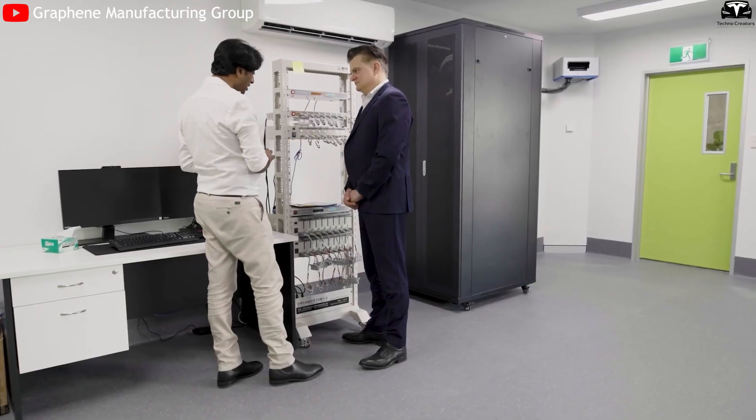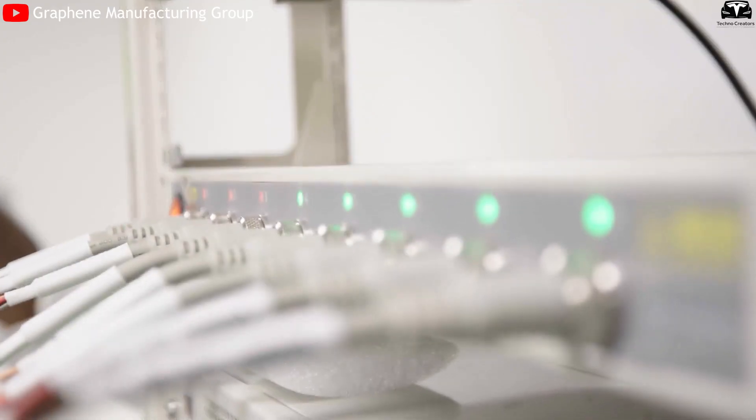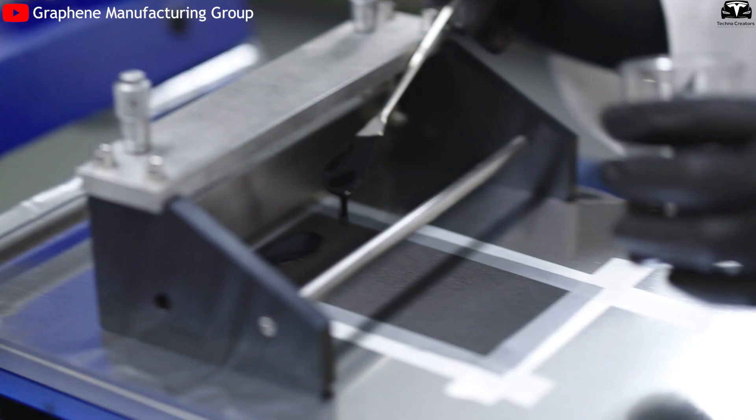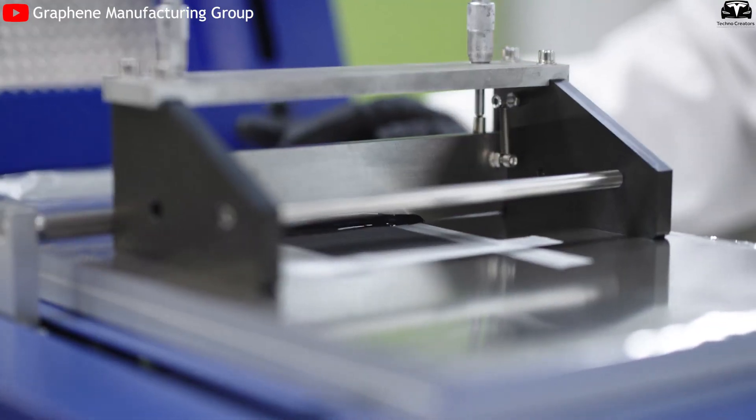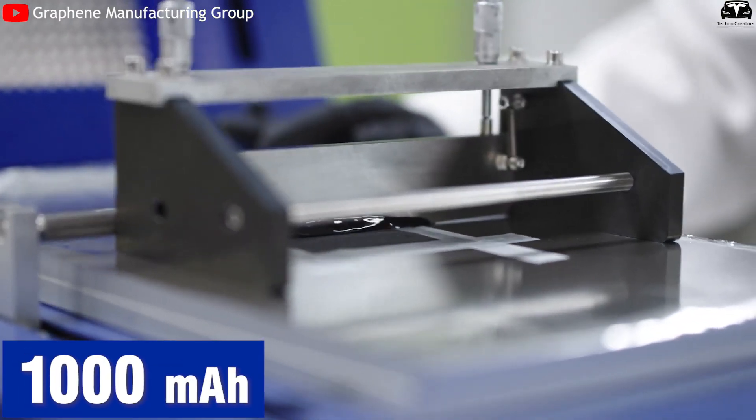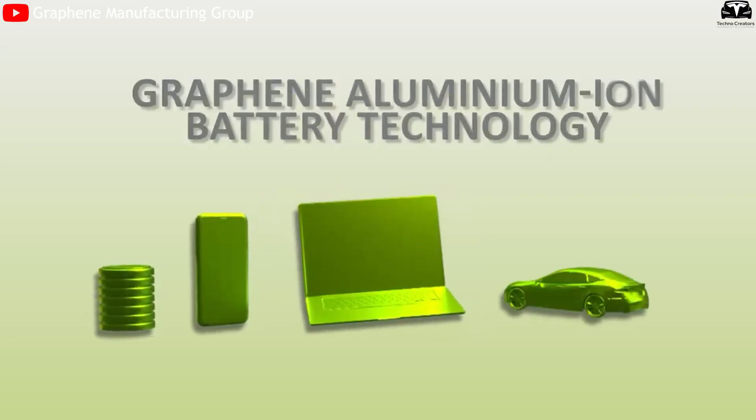Currently, the technology prioritizes fast charging, safety, and durability before enhancing energy density. A major step forward is GMG's successful development of pouch cells with capacities over 1,000 milliamp-hours, a crucial transition from laboratory coin cells to automotive-grade batteries.